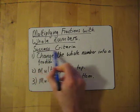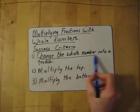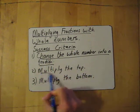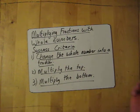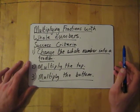So a success criteria for this: change the whole number into a fraction, multiply the top numbers, and then multiply the bottom numbers. Exactly the same as multiplying fractions like I showed you before.